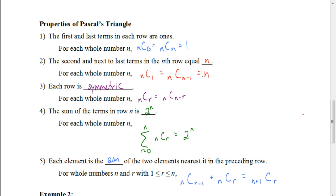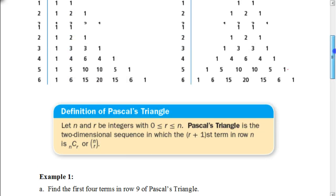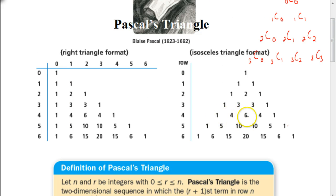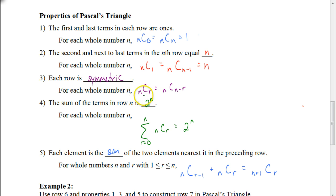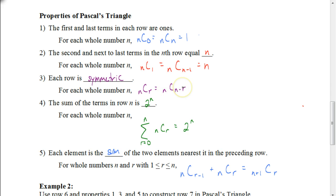Property 3: each row is symmetric. Looking at Pascal's Triangle, we see 1, 4, 6, 4, 1 and 1, 5, 10, 10, 5, 1 and 1, 6, 15, 20, 15, 6, 1 — each row reads the same forwards and backwards. We describe that as: n choose r equals n choose n minus r. So 9 choose 3 has the same value as 9 choose 6, and 9 choose 4 equals 9 choose 5, and so on.